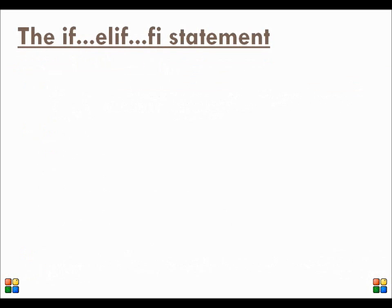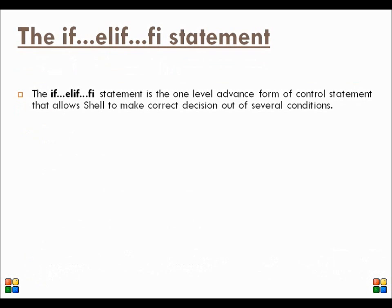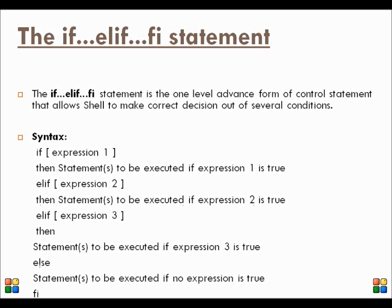The if-elif-fi statement is one level advanced form of control statement, which allows shell to make correct decisions out of several conditions. This is just a series of if statements where each if is part of the else clause of the previous statement. First the expression is evaluated — if it is true, the corresponding statement is executed. Otherwise, a series of else-if statements are evaluated. If none of them are true, then the statement in the else block is evaluated and we come out of the loop.